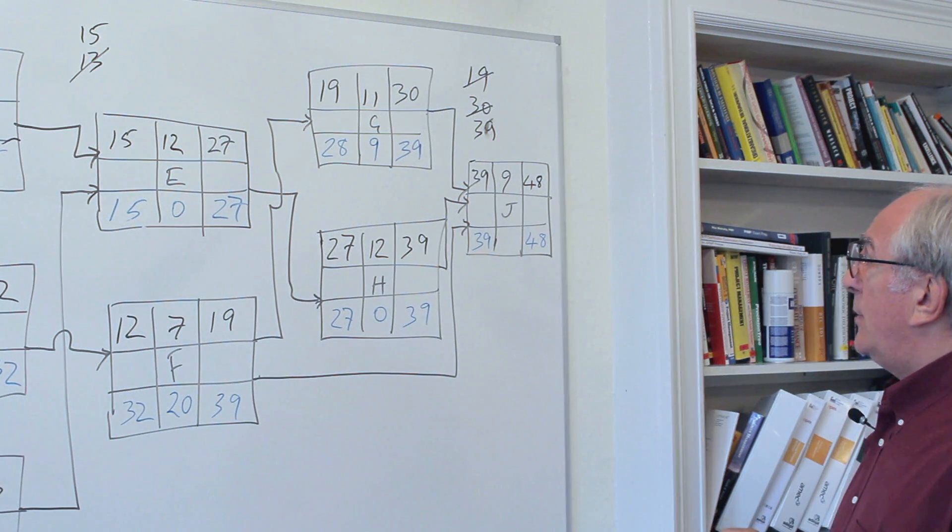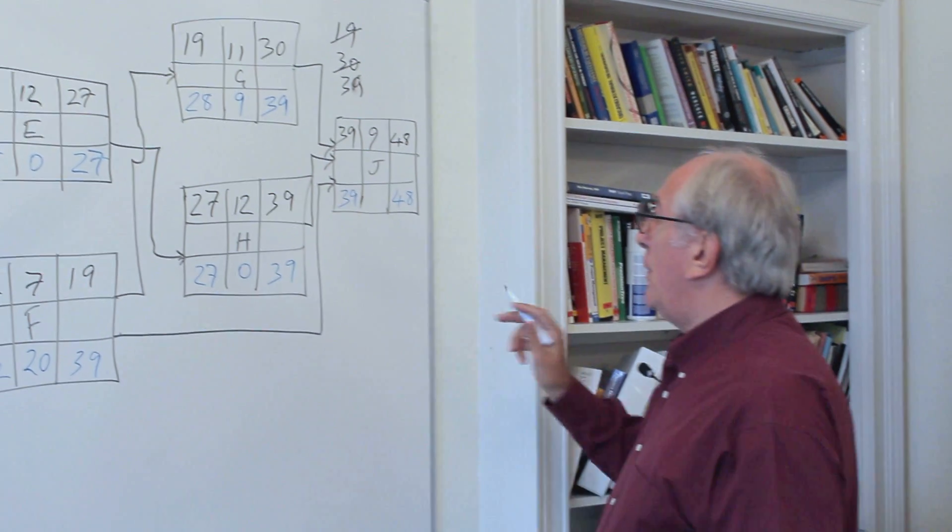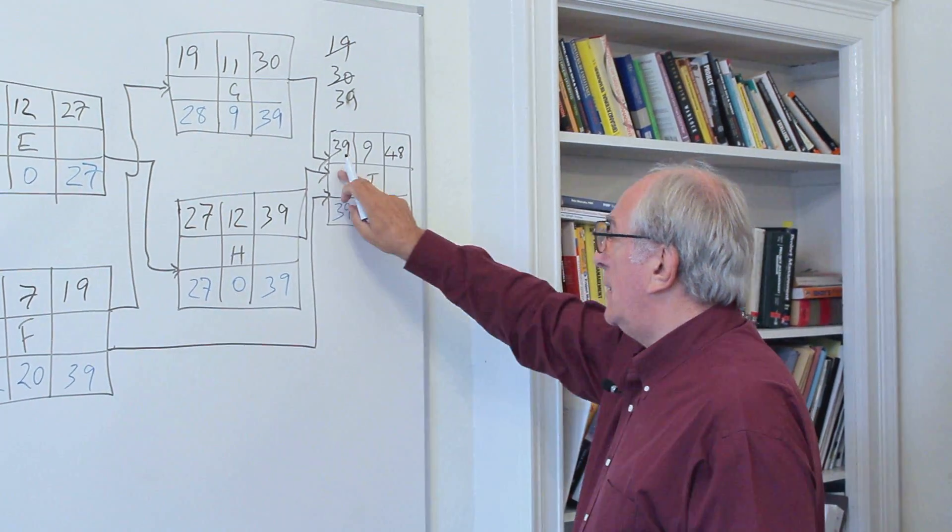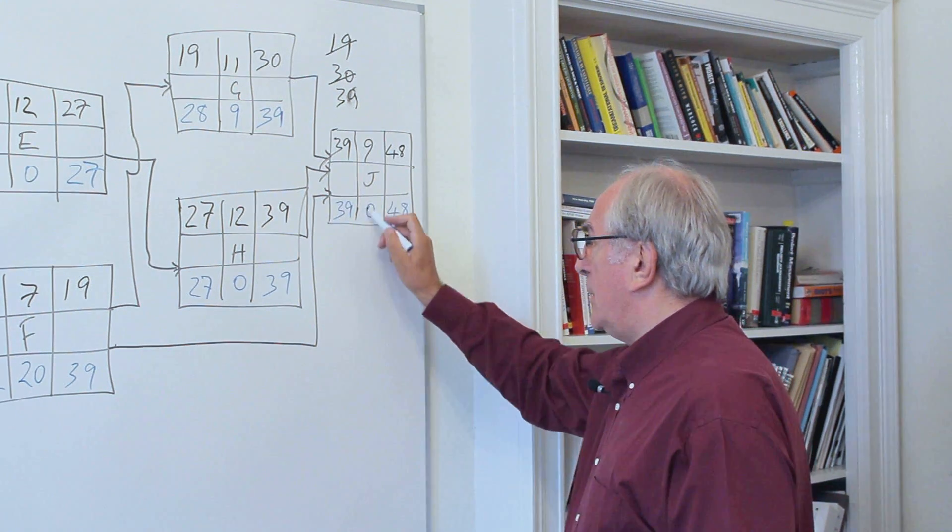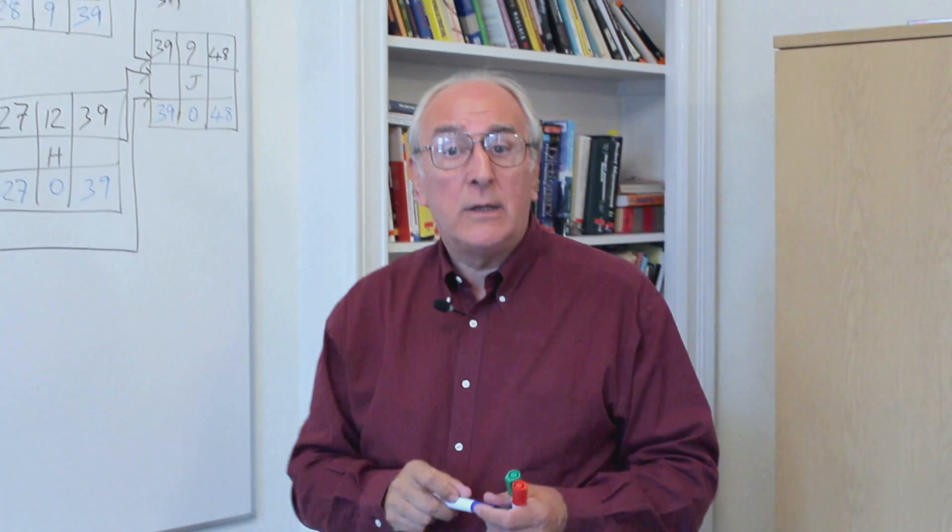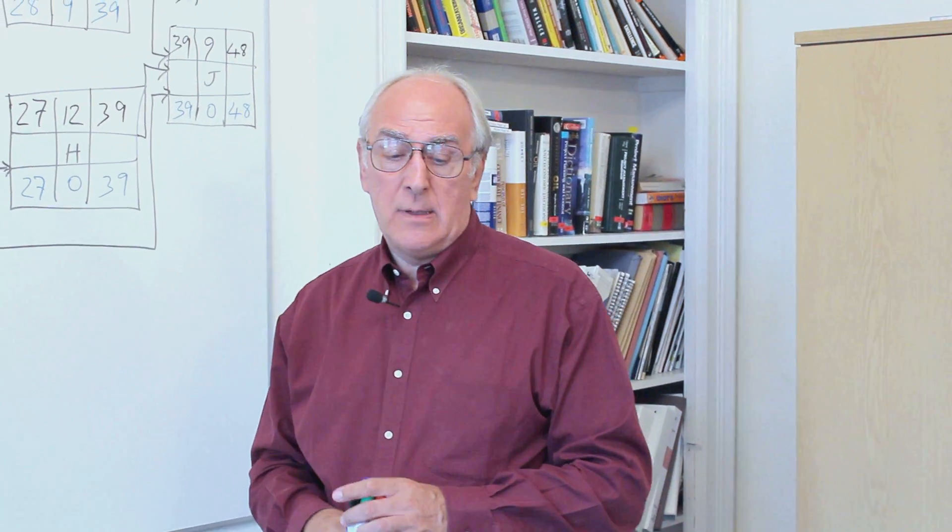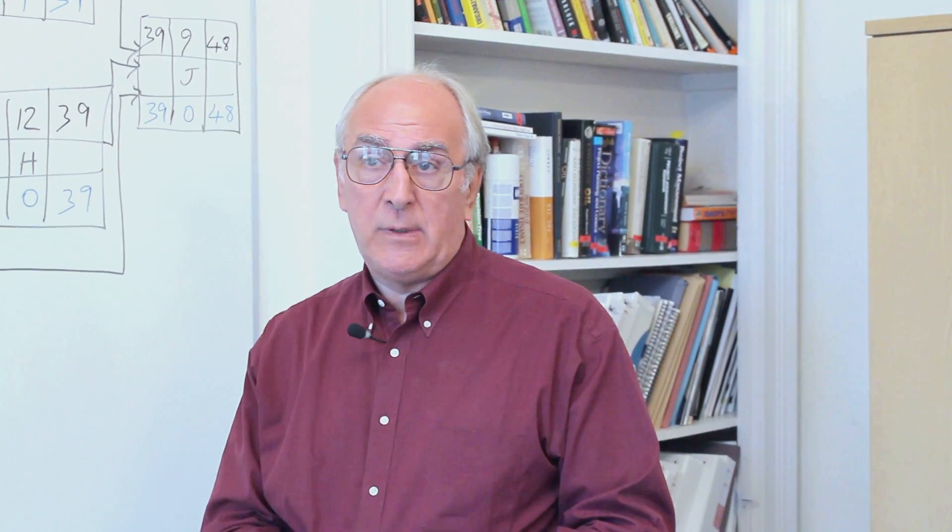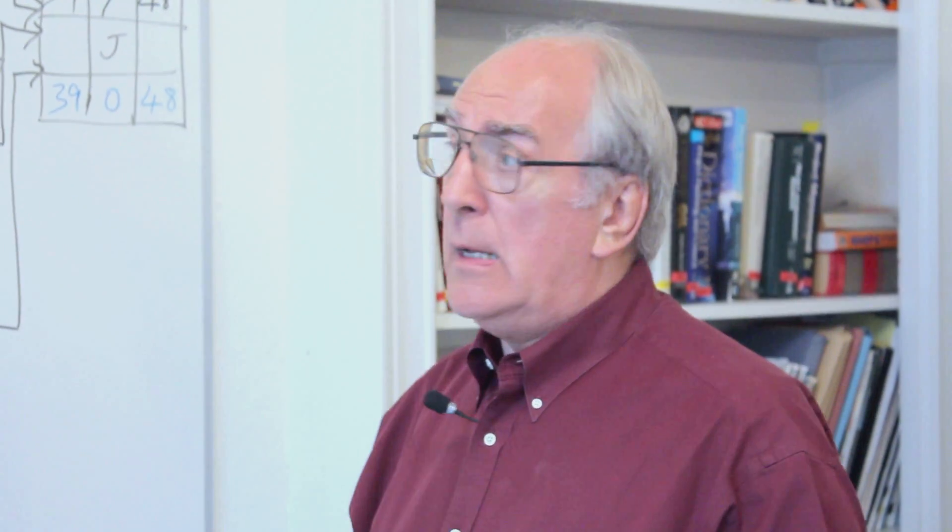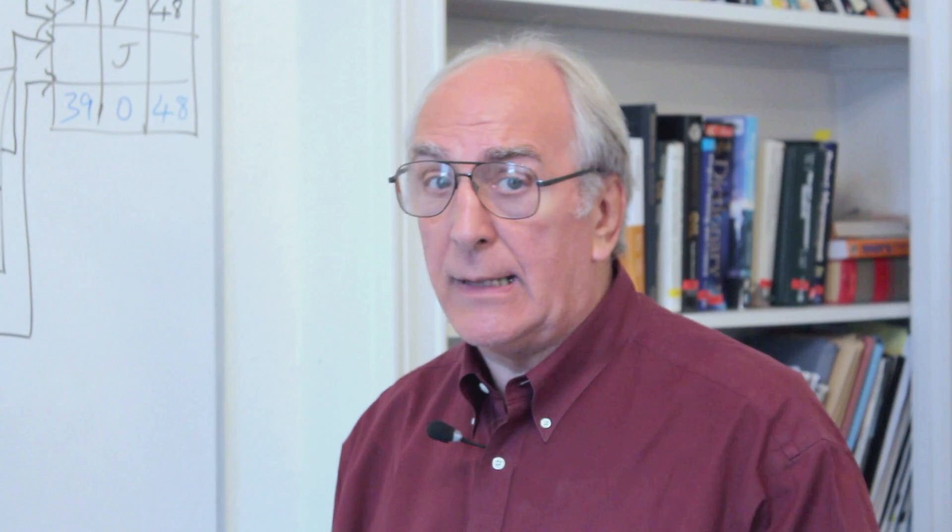Now the last activity: we've got to float on that one, it's going to be forty-eight minus thirty-nine minus nine, which is zero. So what do we conclude from this? Well, those activities with zero float are known as critical activities, and those critical activities means that if there's any delay in any of those activities, then the whole project will be delayed. And the path of those critical activities is known as the critical path, hence the name of the technique: the critical path analysis.